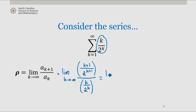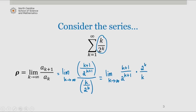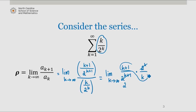Rewriting this as a product, we get the limit as k approaches infinity of k plus 1 over 2 to the k plus 1, times 2 to the k divided by k. We notice that 2 to the k over 2 to the k plus 1 leaves us with a 2 in the denominator. And we know that the limit as k approaches infinity of k plus 1 over k approaches 1.